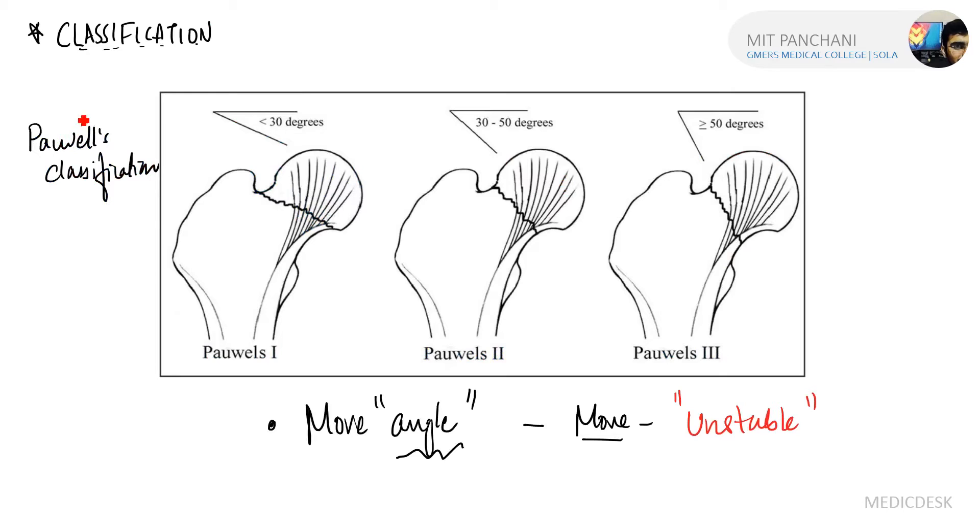Talking about classification, there are many classifications. Of them, we will be discussing the major three classifications. One of them is Powell's classification. According to Powell, we have to draw a line coinciding with the fracture line and one line which is horizontal to that fracture line.